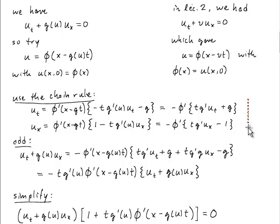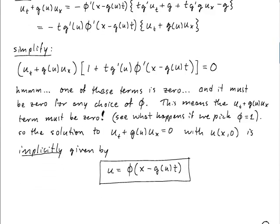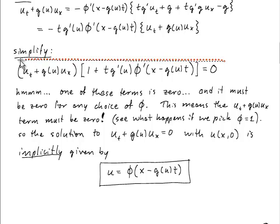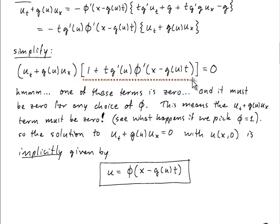Okay, so now we have to substitute these two things into the partial differential equation. And we get that u_t plus g of u times u_x is, after some algebra, minus t g prime of u phi prime of the argument x minus g of u t multiplied by u_t plus g of u u_x. Okay, so notice that this guy and this guy are the same. And now we can simplify this a little bit. We can say that this is true if and only if this equation is true. Right? So what we have here is that the combination of first order partial derivatives that was in our original problem, u_t + g(u)u_x, multiplied by this complicated coefficient, must be equal to 0.